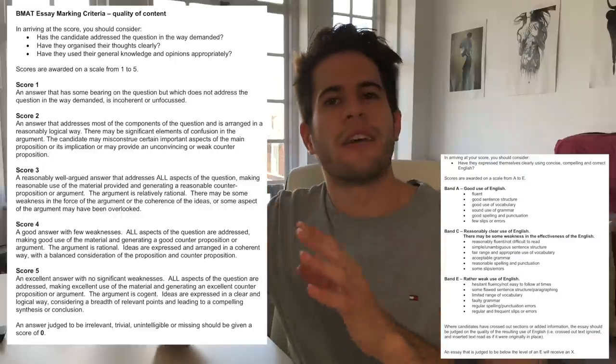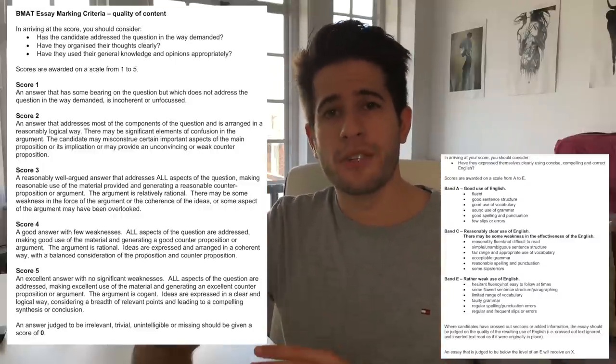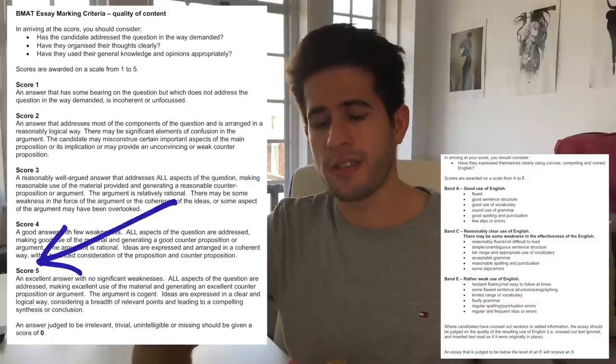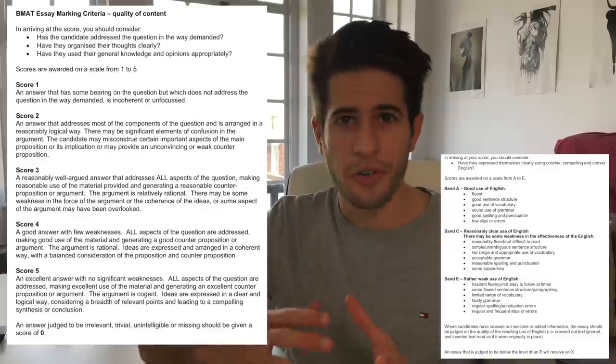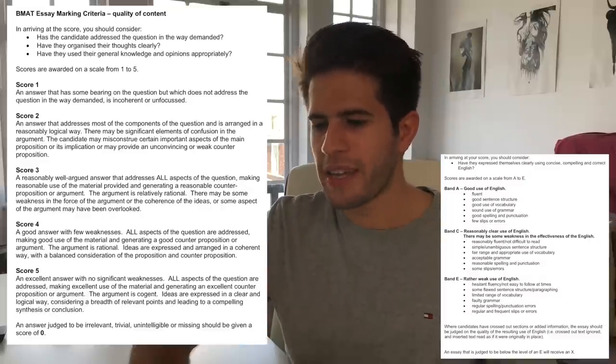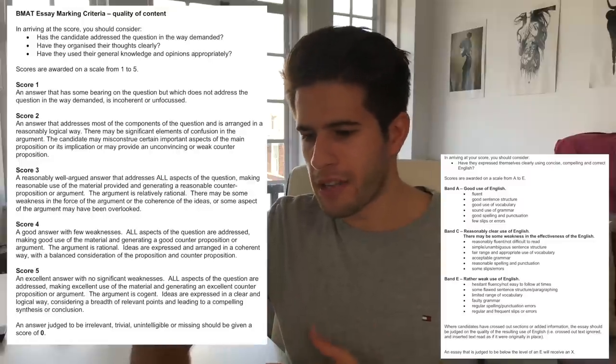I'm also going to include the essay rubric on screen. You can compare your essay answers against it. Full marks is awarded for an essay with an excellent answer and no significant weaknesses — you must address all components of the question, have good arguments for and against, a compelling conclusion, and logical, rational, coherent arguments. Now let's go look at a couple of actual essays and see how I would plan my for, against, and conclusion.